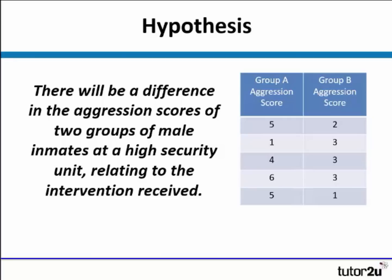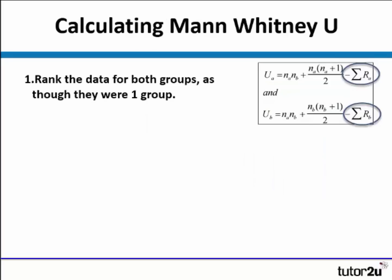We have two groups — group A and their aggression scores, and group B and their aggression scores. To test the difference, we're looking at the difference between them. We're also going to look at two completely separate groups, so group A and group B are independent measures, and the data is at least ordinal. The first thing we need to do for calculating Mann-Whitney U is to rank the data for both groups as though they were one group.